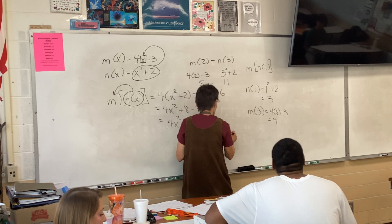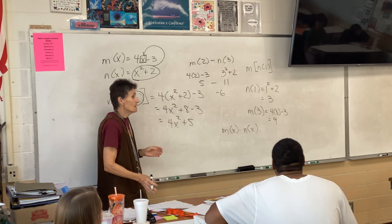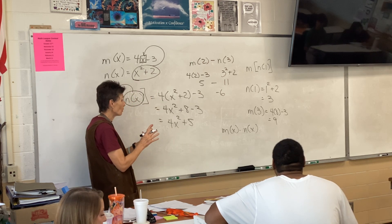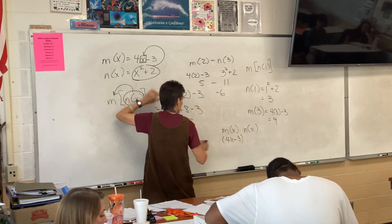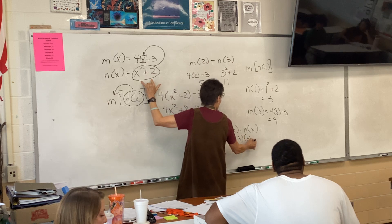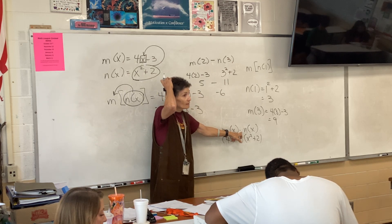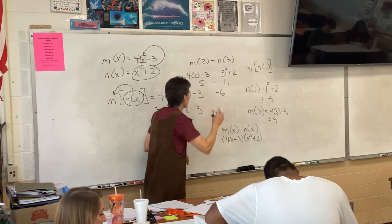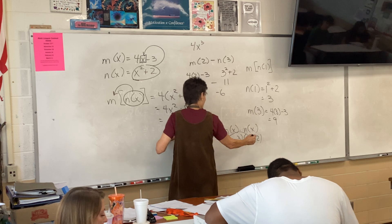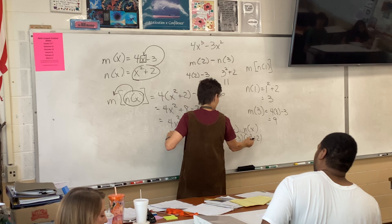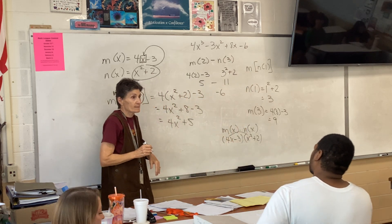The last one in that section says we need to multiply our m function times our n function. This says take m(x) = 4x - 3 and multiply it times n(x) = x² + 2 — that is a multiplication problem. So I'm going to FOIL: that's going to be 4x³ - 3x² + 8x - 6.